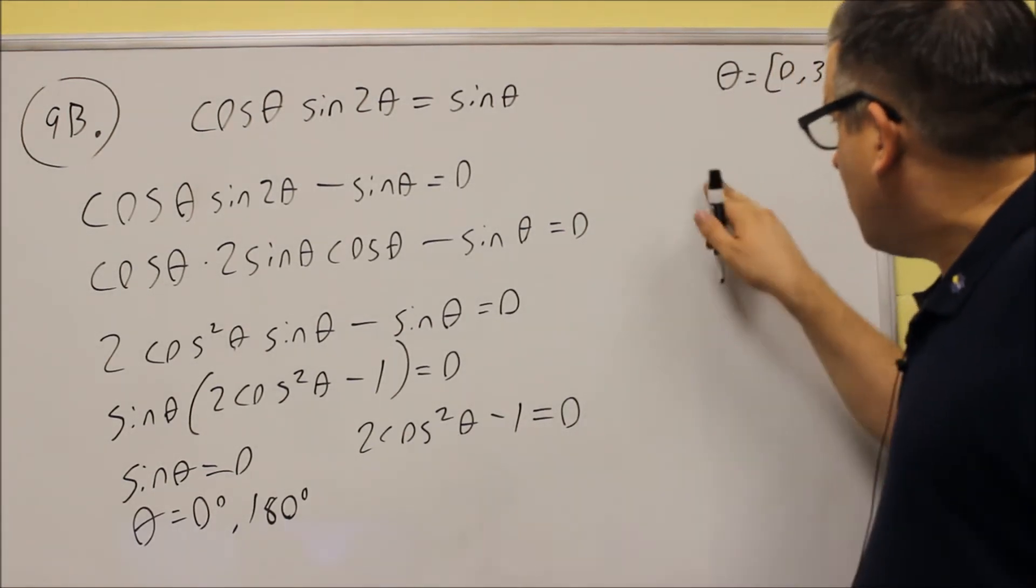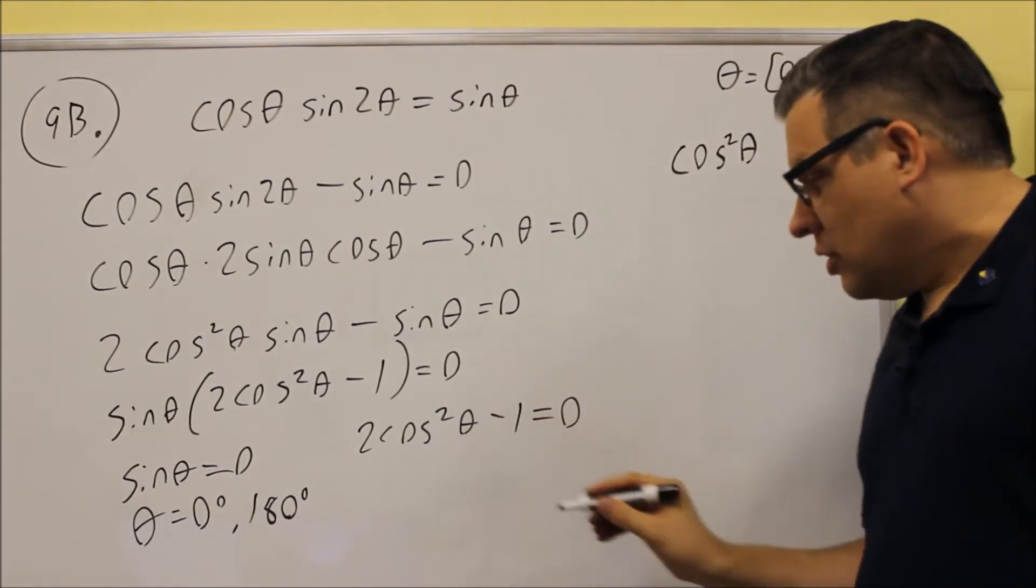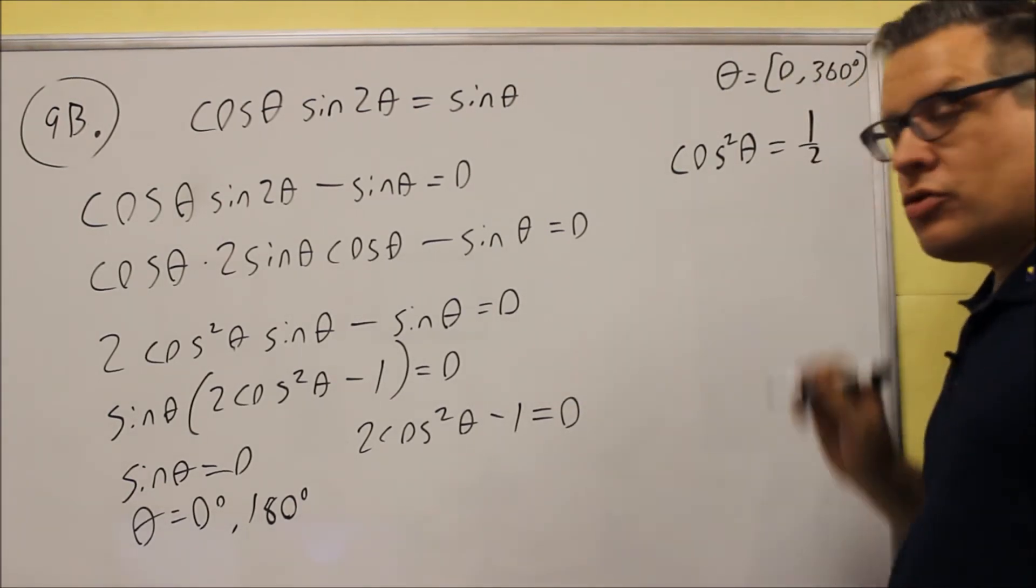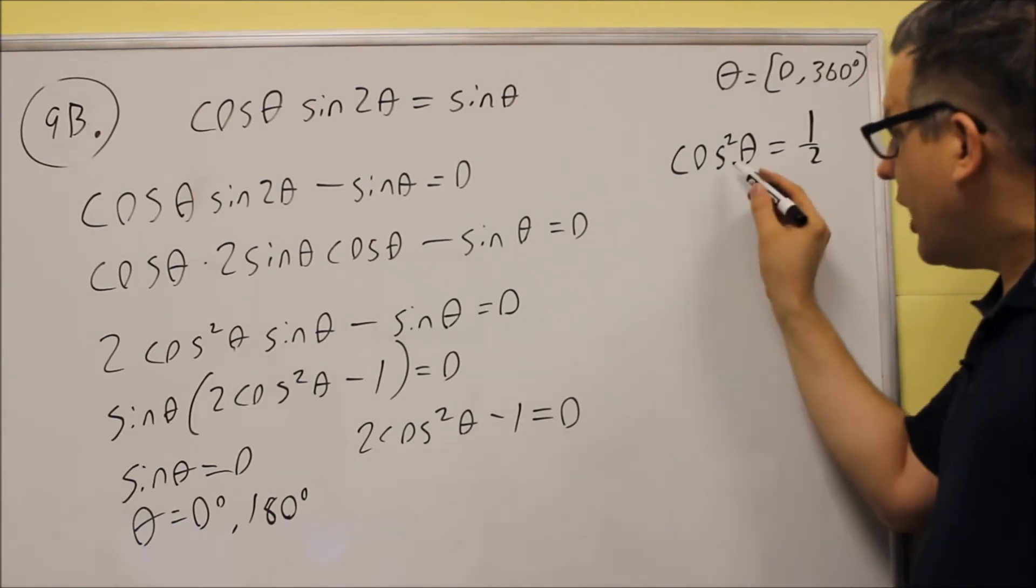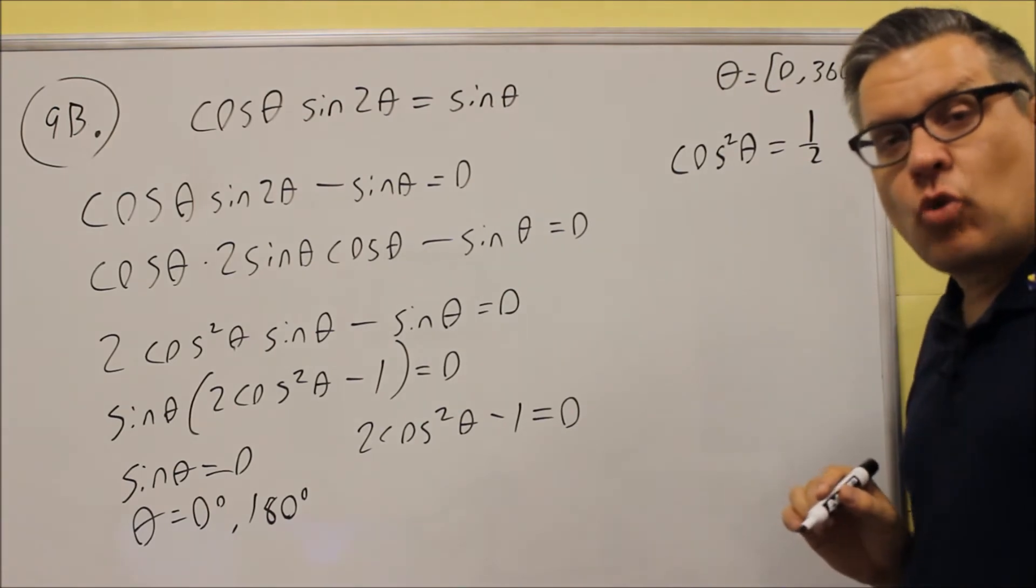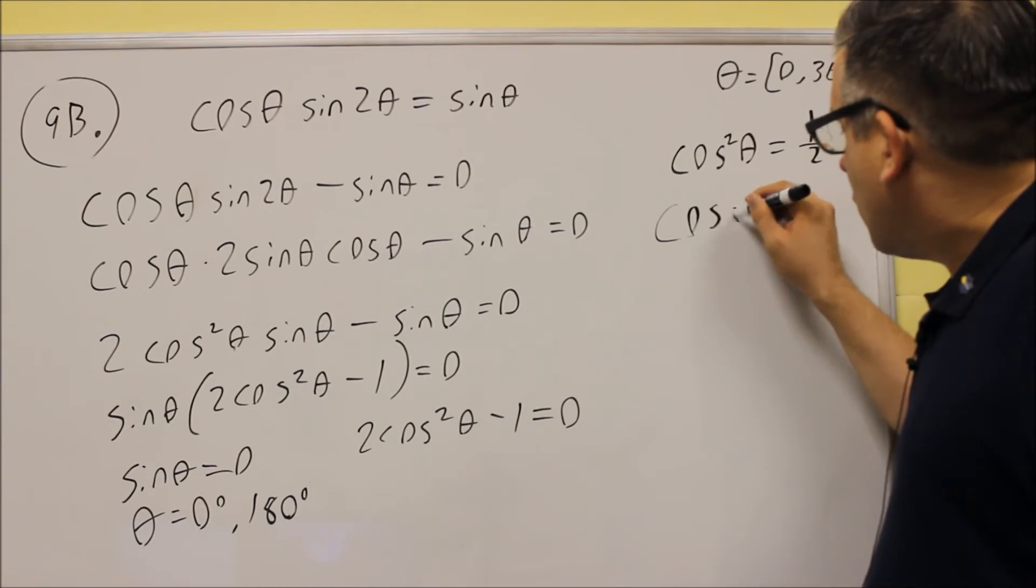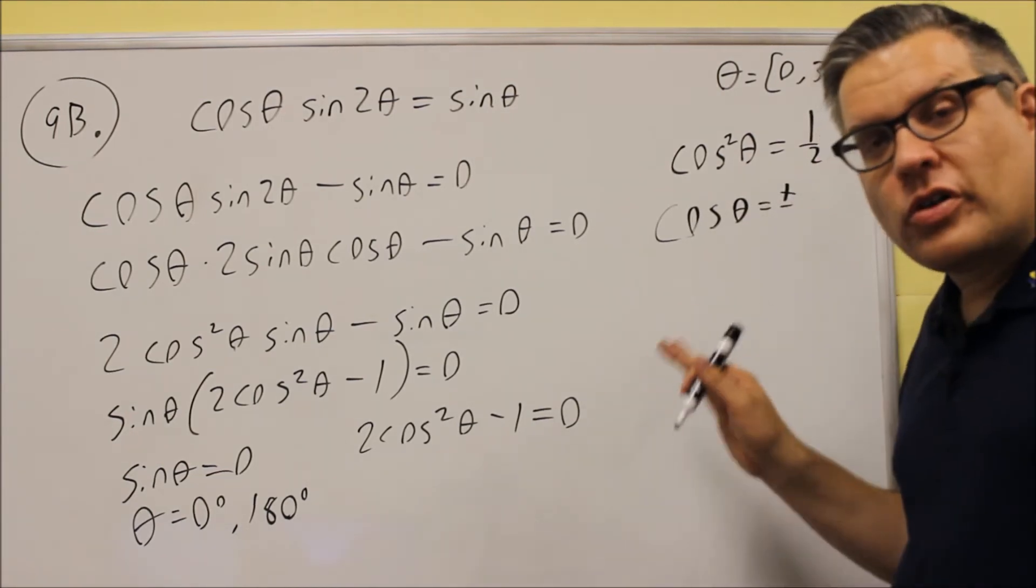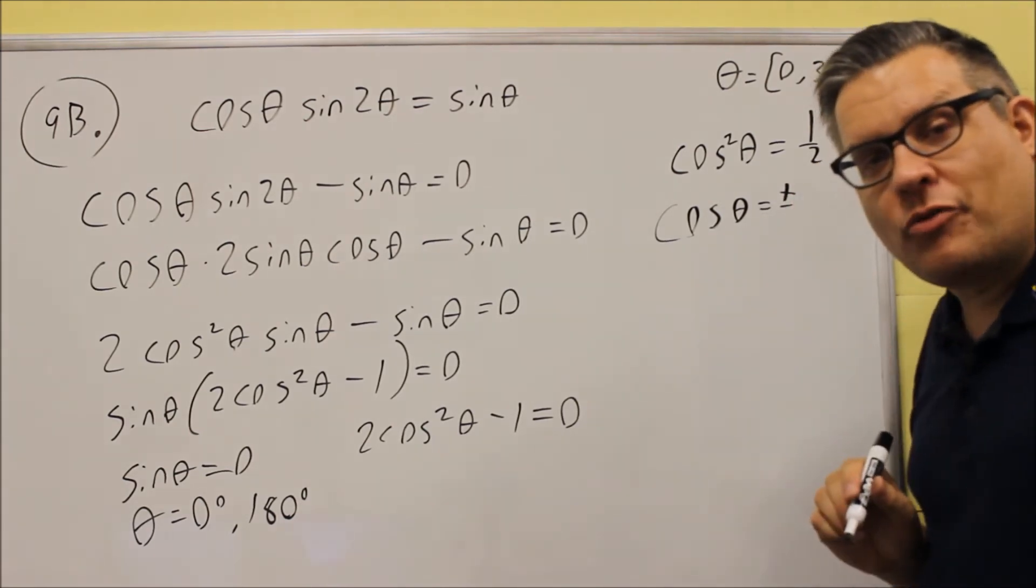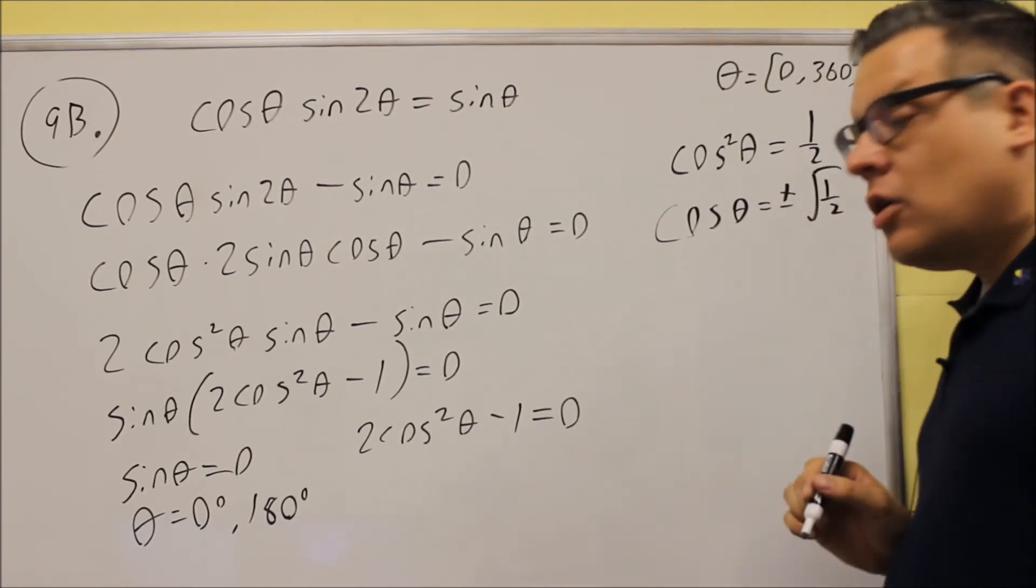Now the second one, let me bring that up here and solve for it. If we solve for cosine squared, add 1, divide by 2, we get cosine squared that is equal to 1 half. Now you don't want to look at the unit circle for 1 half because it's cosine squared. So you have to take the square root of both sides first. So if you do that, don't forget the most important thing about squares is you've got to make sure you put plus or minus. Every time you take the square root of both sides, you need plus or minus. Plus or minus the square root of 1 half.